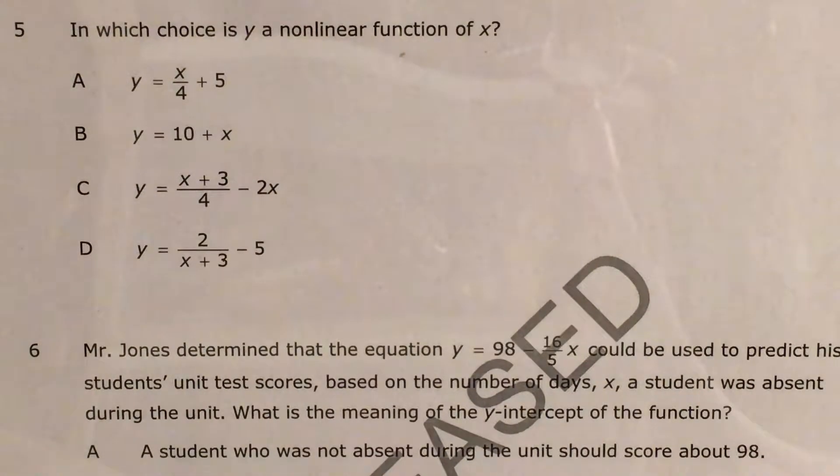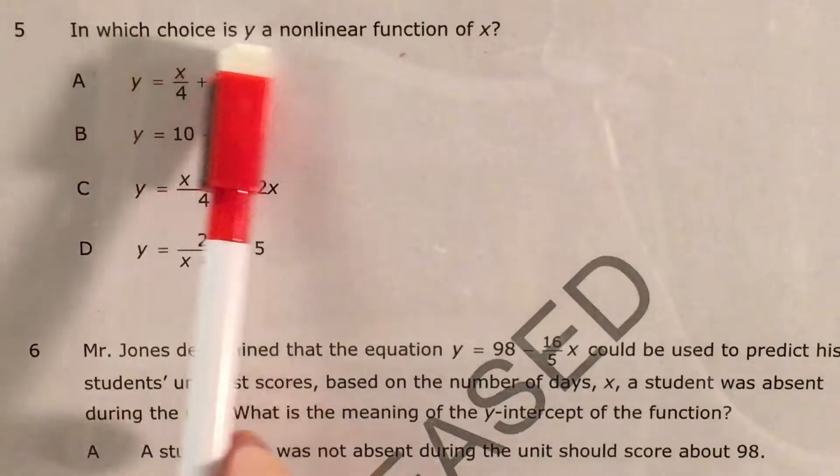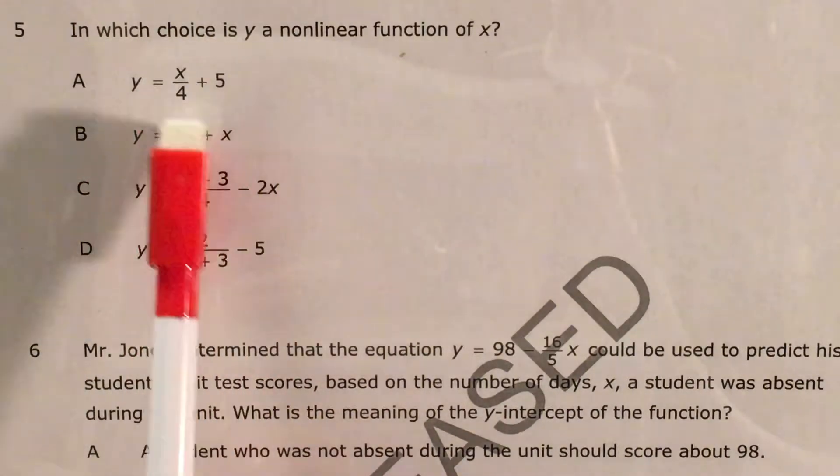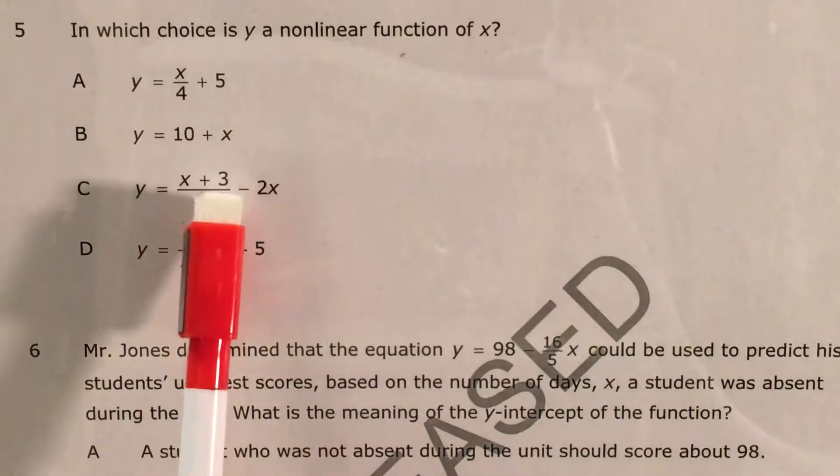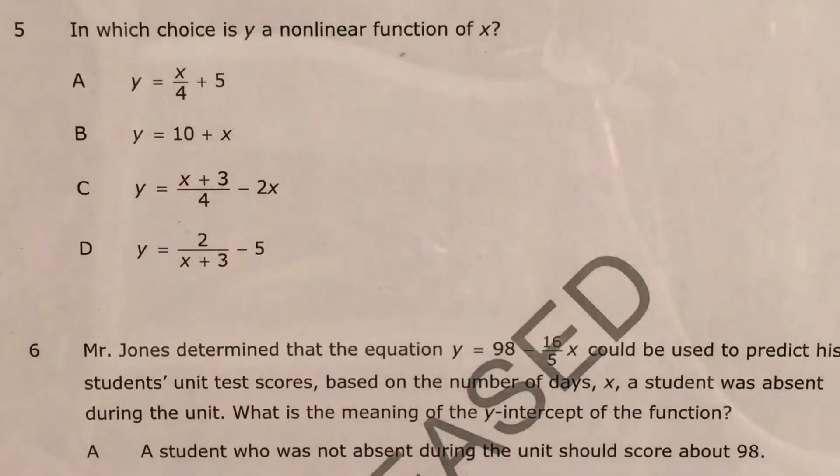What's up, math scholars and math haters? This is Mr. W. Today we're going to tackle question five in the eighth grade math questions that North Carolina released this past school year. As we can see, all we're being asked to do is figure out which choice is going to be a nonlinear function. So if we were to graph it, it would not look like a line.